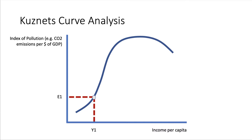Initially, as a country is growing and developing, it's on a fairly steep trajectory, and an increase in income per capita can lead to a substantial rise in emissions associated with heavy industries, for example. That's the upward-sloping part of the Kuznets Curve, implying a trade-off between growth and environmental degradation.